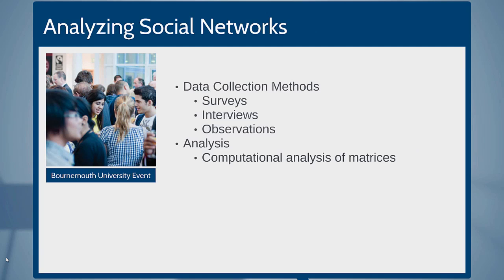In the old days, we used traditional data collection methods to collect information on social networks. Surveys were quite popular, interviews as well, and then the interviews were analyzed to explicitly look for connections or observations. For example, looking at the photo on the left, a researcher could observe the interactions around a networking event for about an hour, and then identify who's been talking to who and create a social network from that. We then took the data from surveys, interviews, and observations, and did a computational analysis of a matrix — basically rows and columns of data — and from that we have some understanding of the social network.